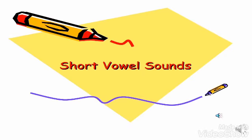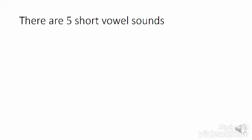Let us start with the short vowel sounds. There are five short vowel sounds. We have A, E, I, O, and U.